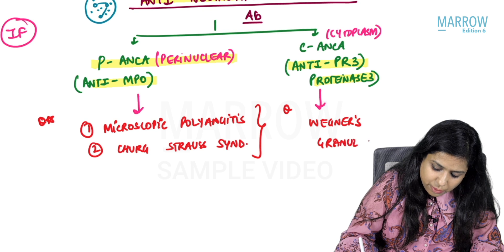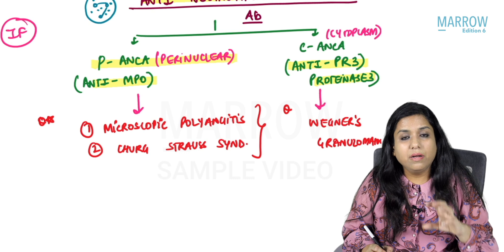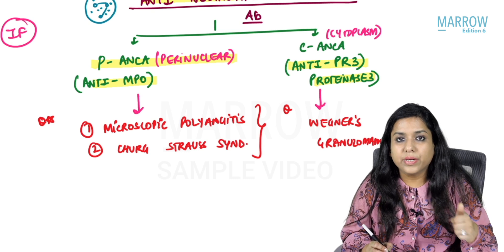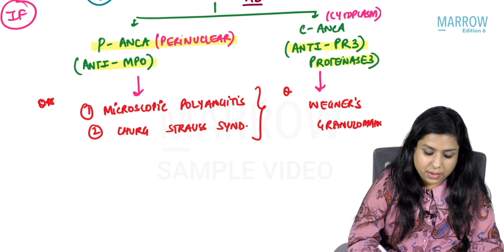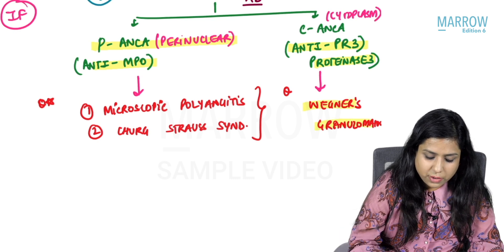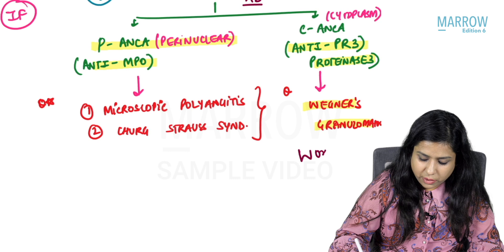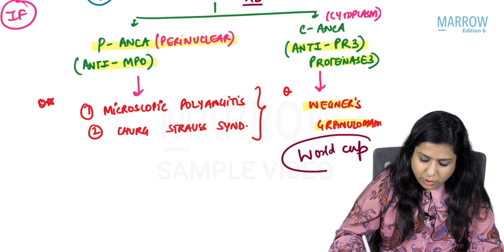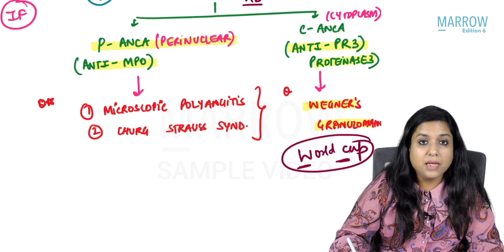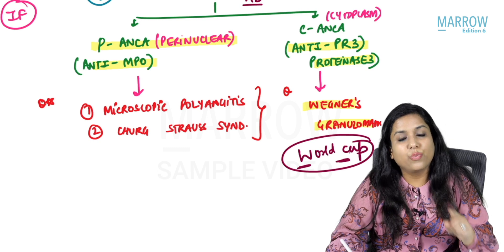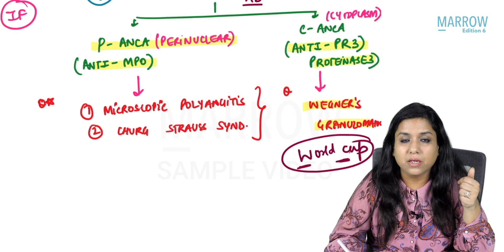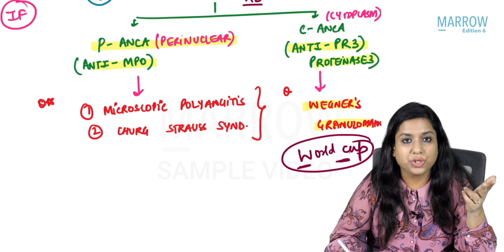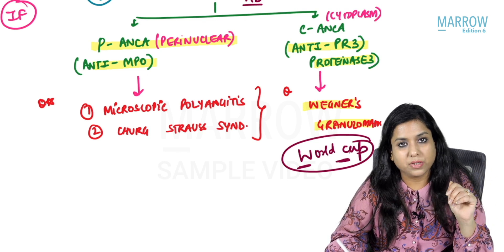To remember this, use the mnemonic 'World Cup': W for Wegener's, C for CANCA. So Wegener's is CANCA positive. That means the other two entities — microscopic polyangiitis and Churg-Strauss — are PANCA positive.